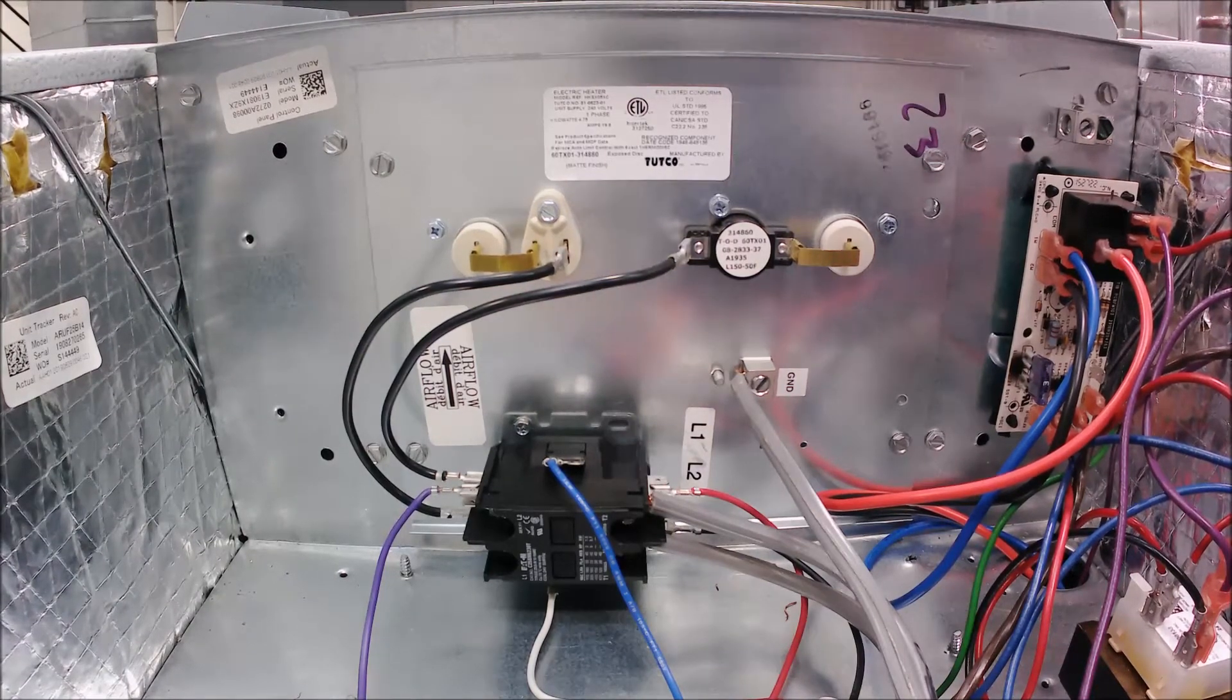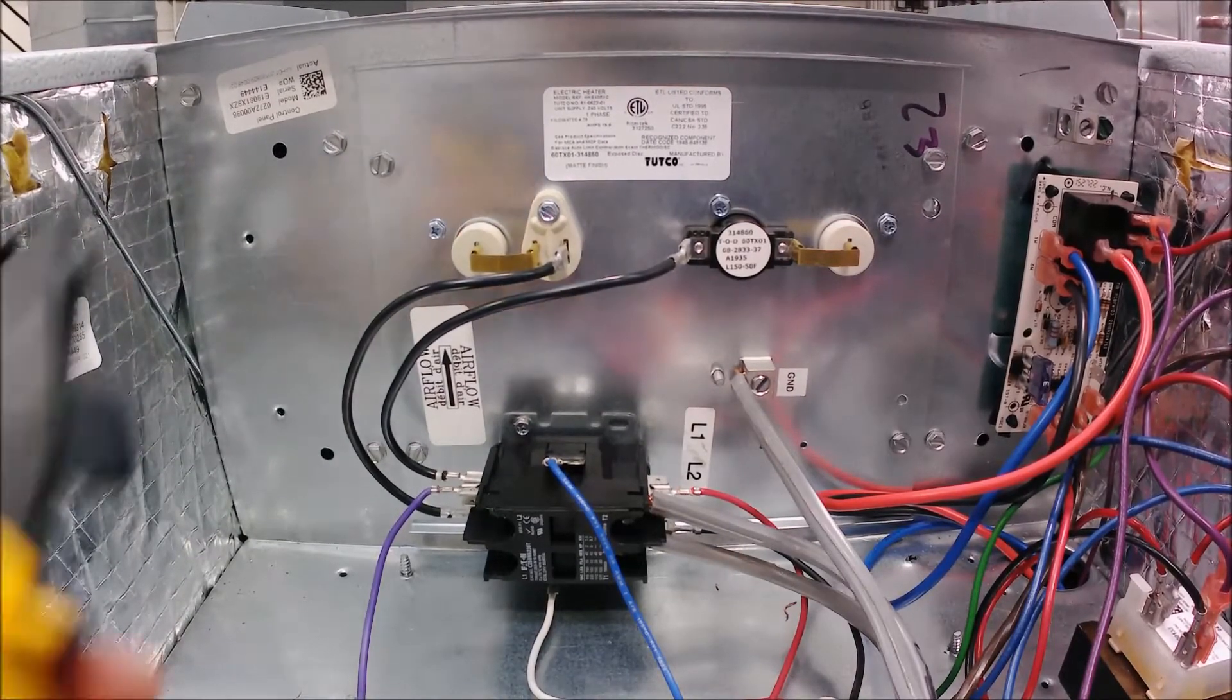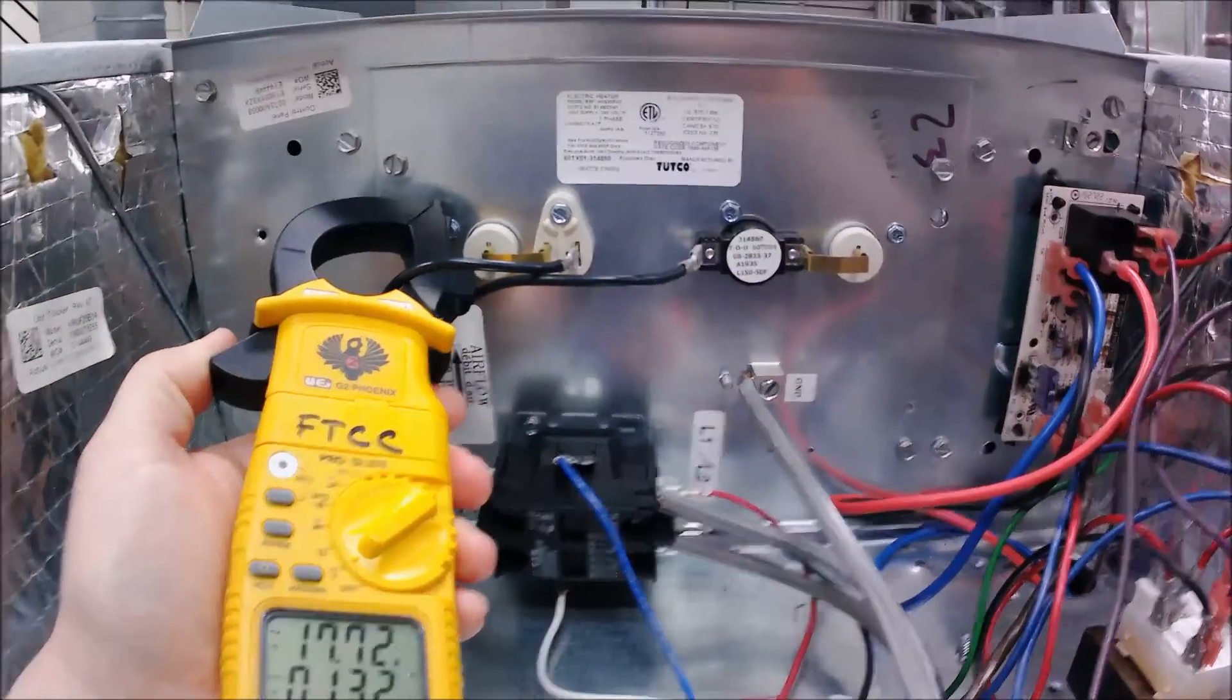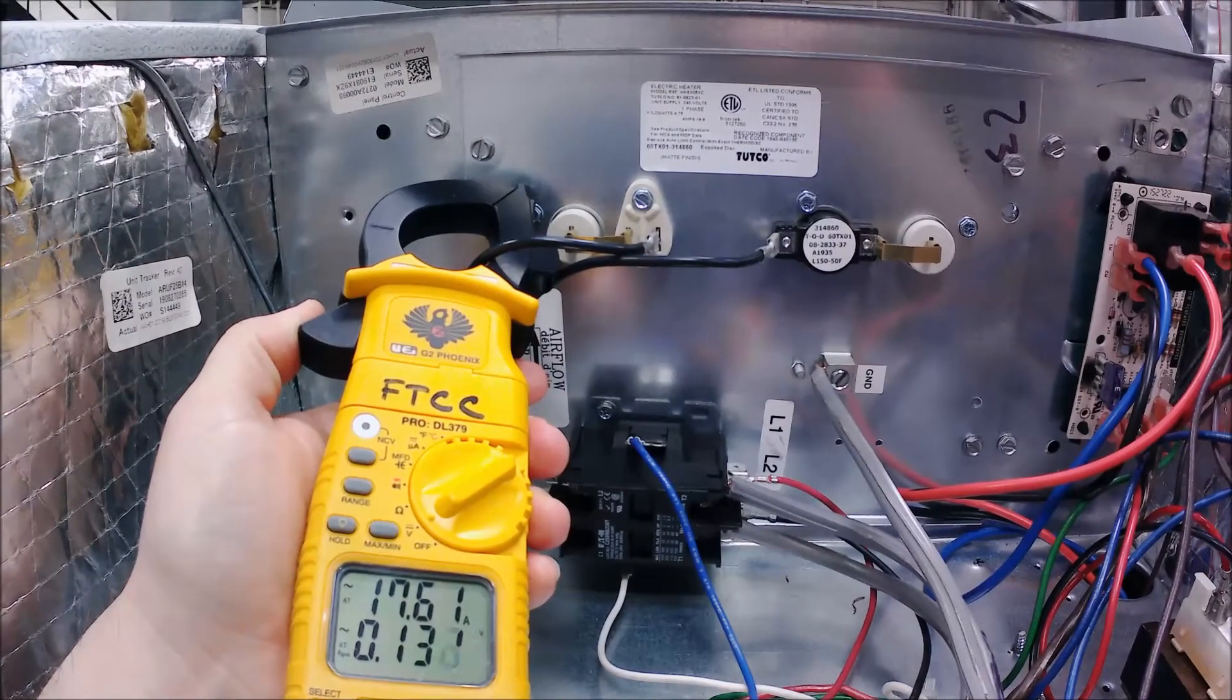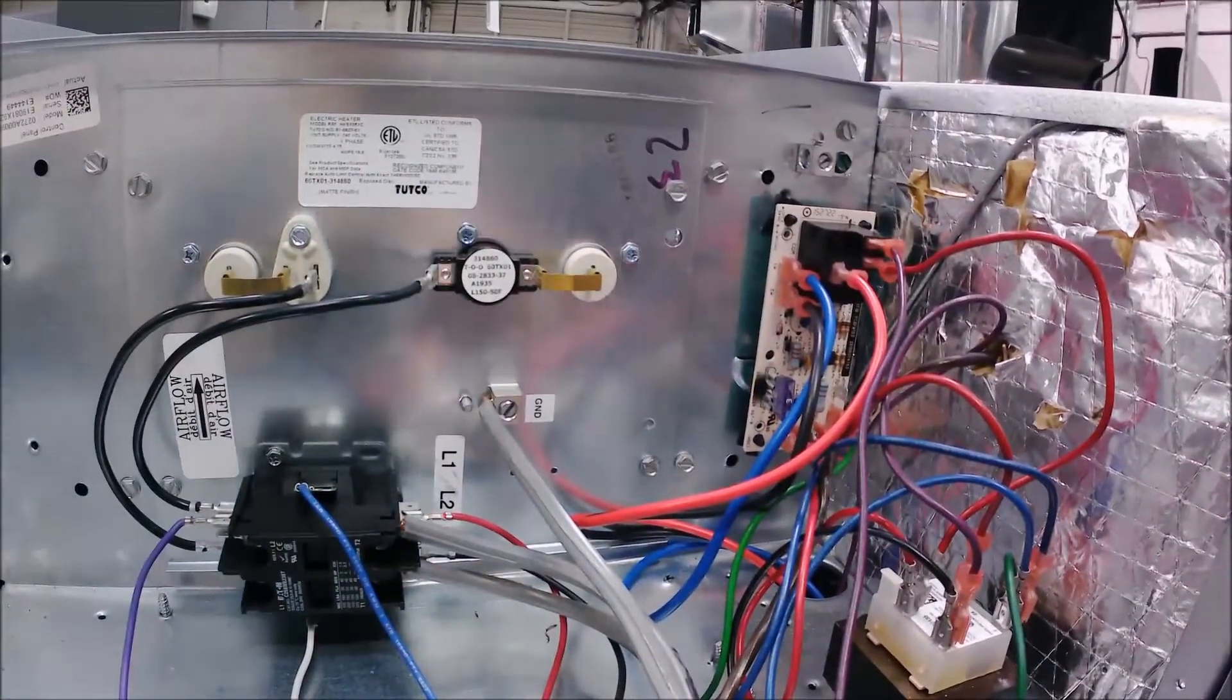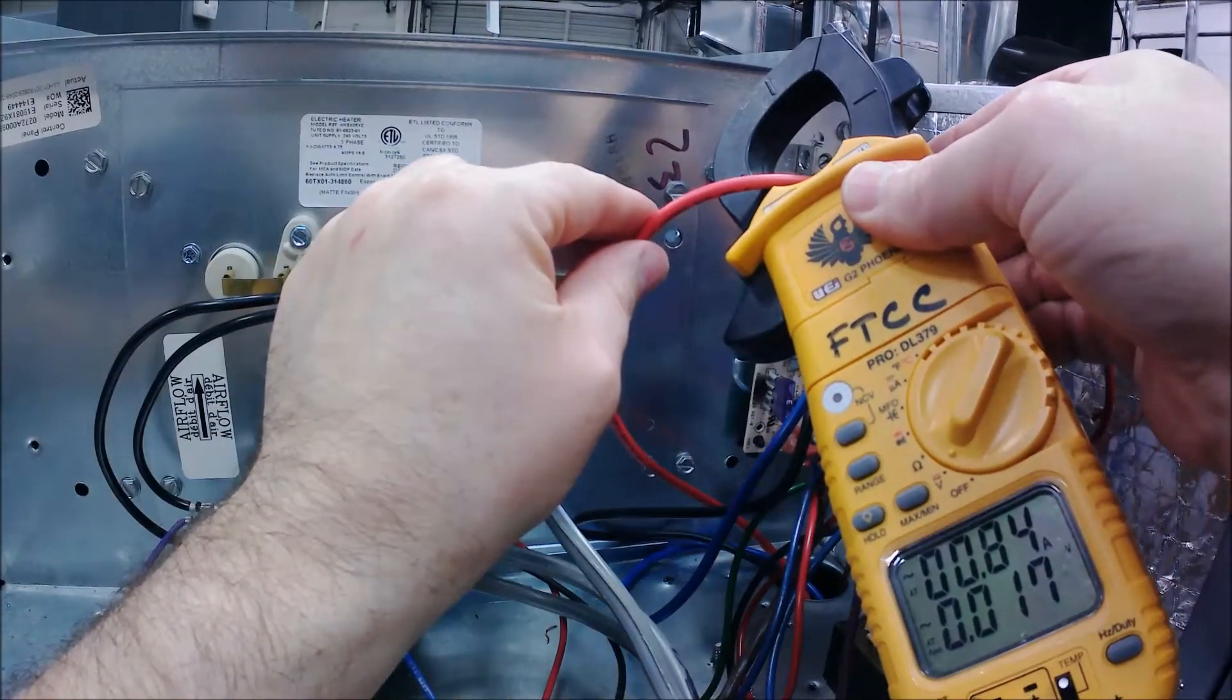All right, there goes our heating elements. Simple amp draw - you can see down there at the bottom we've got about 17 and a half amps on that one heating element. This is a simple 5kW heat strip. If I were to check the amp draw on the fan, you're looking at about almost one amp.